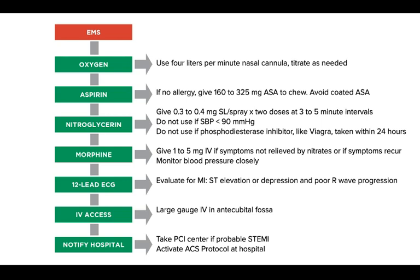For nitroglycerin, give 0.3 to 0.4 milligrams sublingual spray times two doses at three to five minute intervals. Do not use if the systolic blood pressure is less than 90 mmHg.